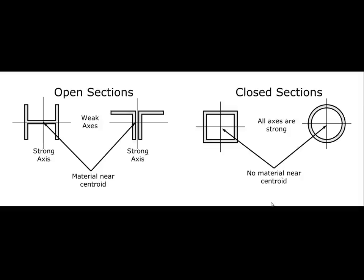Closed sections are the ideal shape for columns because no matter what neutral axis you consider, the material is configured to resist buckling about that axis equally. A tube is equally resistive to buckling about any neutral axis. An H-section, however, is clearly stronger about one axis — where flange material is moved further away — but weak about the other, where most material is near the neutral axis. In the end, the column will buckle about its weaker axis.